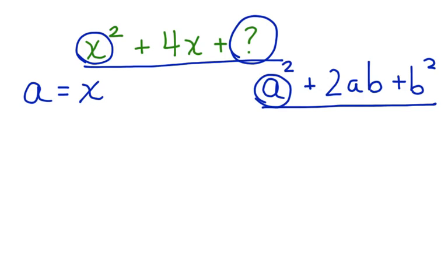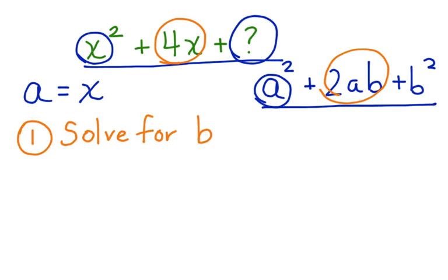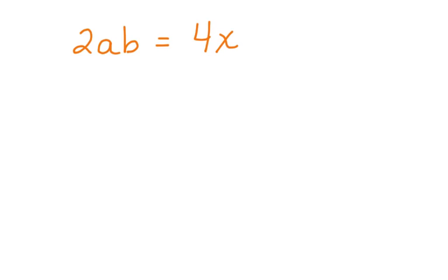Now, the first thing that we're going to do is solve for the middle term. And when we solve for the middle term, notice that x is equivalent to a, which means we still have to figure out what b is. The first thing we're going to do is solve for b. Here's the first thing that we can write: 2ab is equal to 4x.